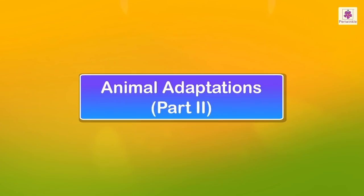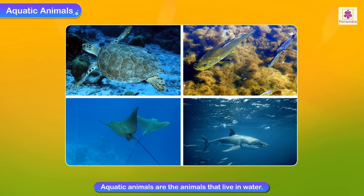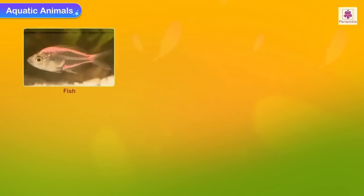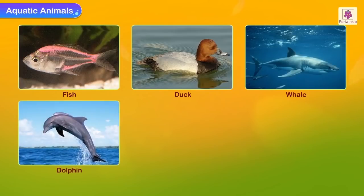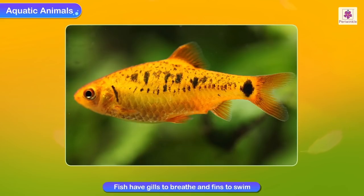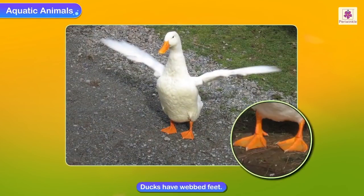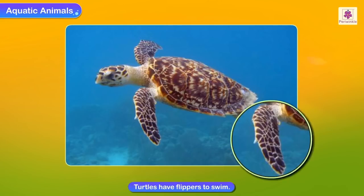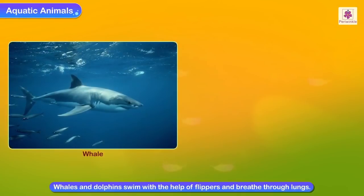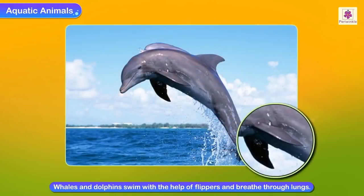Aquatic animals are animals that live in water. Fish, ducks, whales, dolphins, swans and turtles are some aquatic animals. Fish have gills to breathe and fins to swim. Ducks have webbed feet and turtles have flippers to swim. Whales and dolphins are unique aquatic animals which swim with the help of flippers but breathe through lungs.